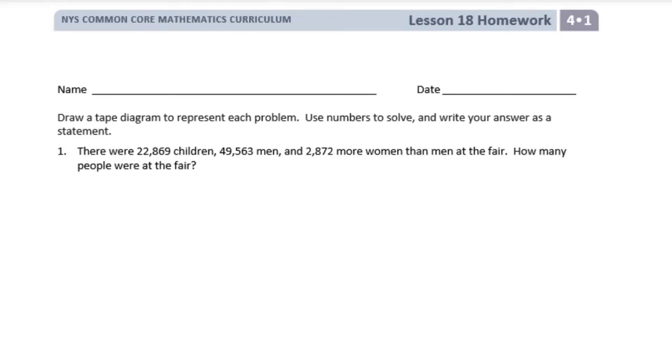Okay, so let's draw a tape diagram for each of them. For children, there were 22,869. There were 49,563 men, more men than children.